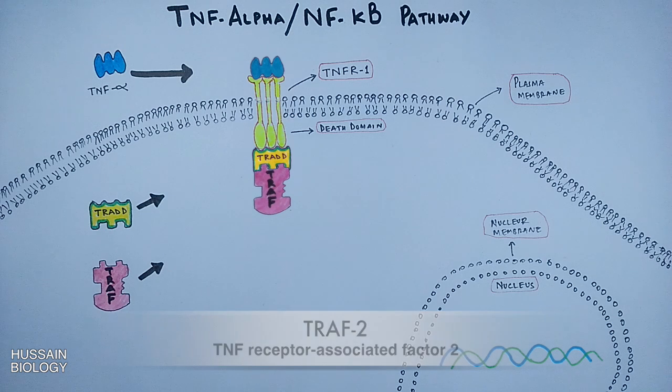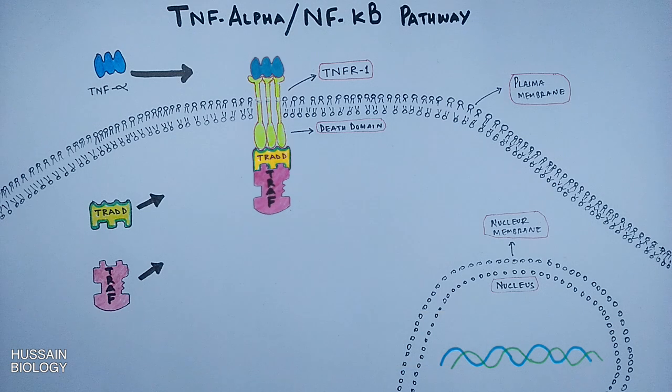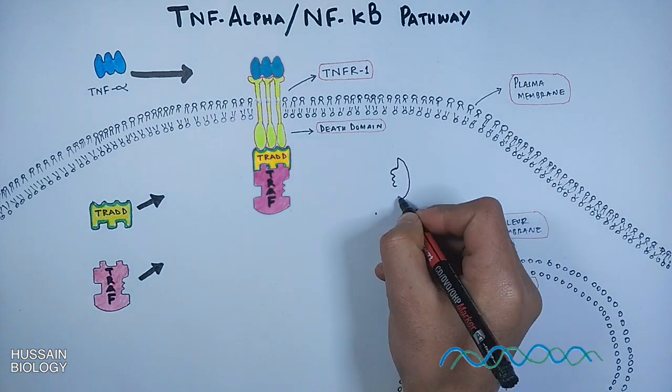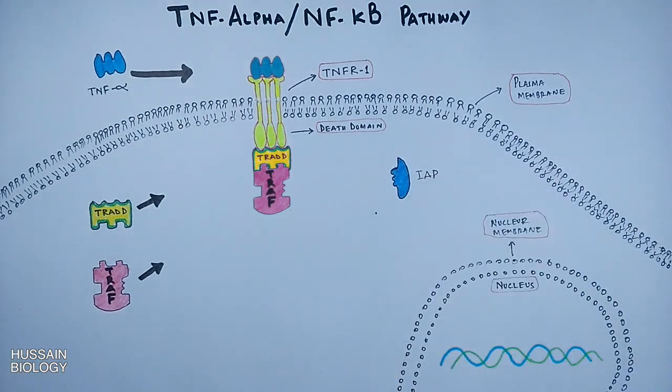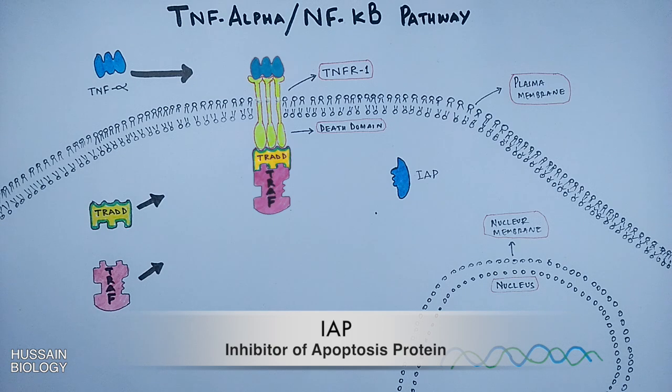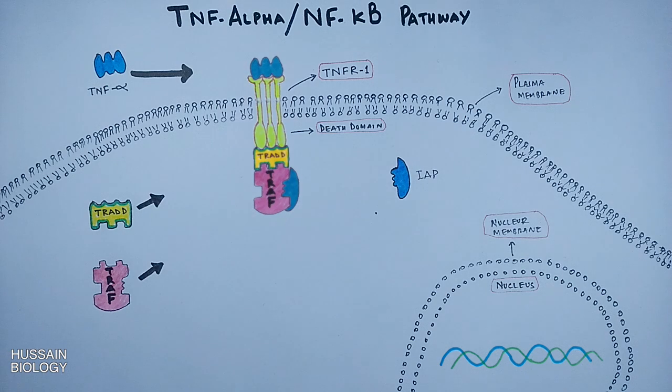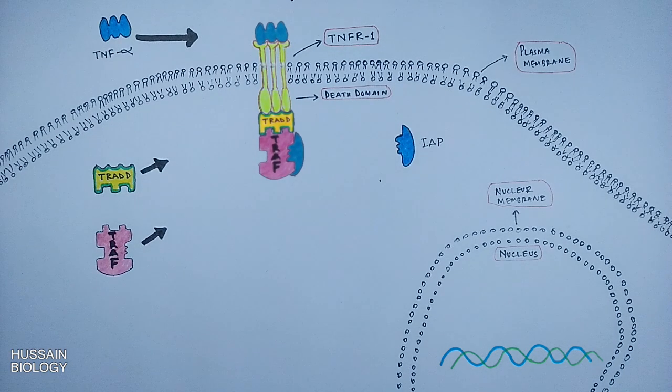It's from here that apoptosis will be skipped and we will move towards the NF-κB pathway. Here we see TRADD and TRAF complex recruits IAP protein, which is inhibitor of apoptosis. The IAP protein comes in and binds TRAF2, with which apoptosis is inhibited.